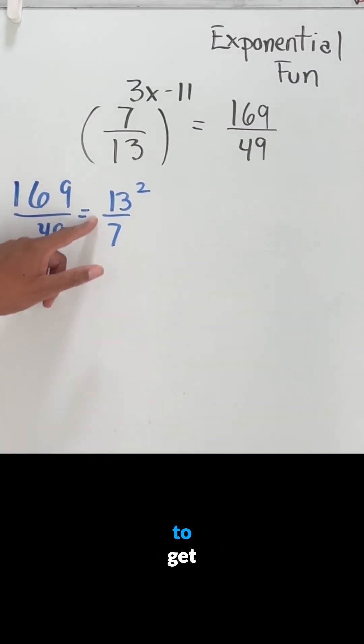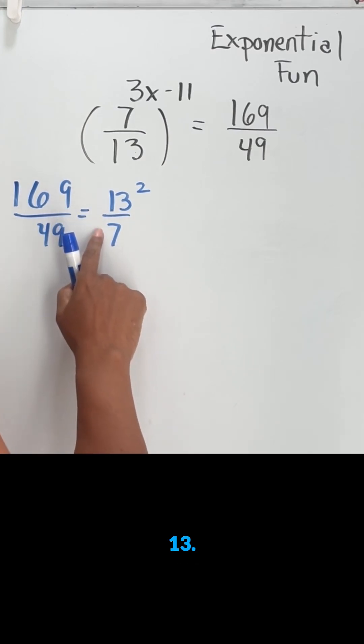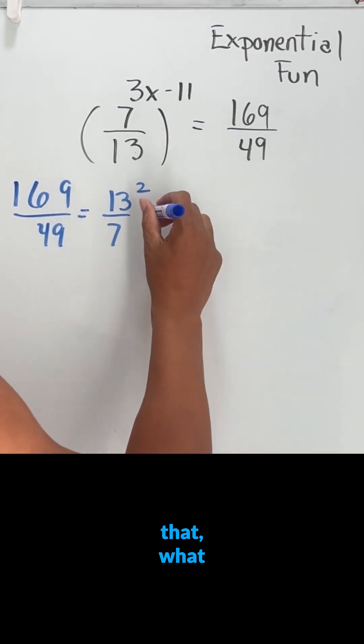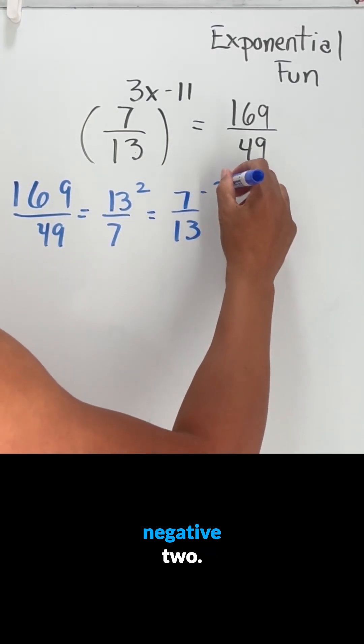So now I'm starting to get something that looks like this. That's good. The only thing I want to do now is I want it to be 7 over 13. In order to get that, what I need to do is I need to change that to a negative 2.